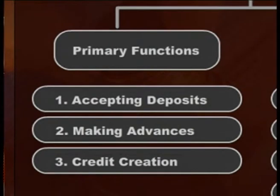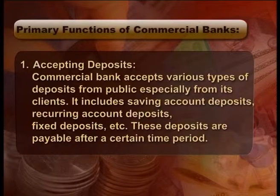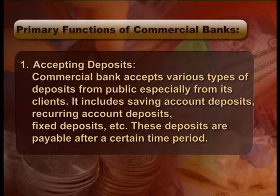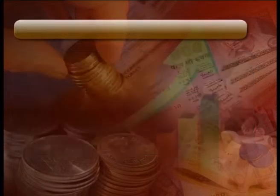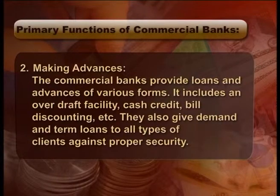Primary functions of commercial banks: Number one, accepting deposits. Commercial banks accept various types of deposits from the public, especially from its clients. It includes saving account deposits, recurring account deposits, fixed deposits, etc. These deposits are payable after a certain time period. Number two, making advances. The commercial banks provide loans and advances of various forms. It includes an overdraft facility, cash credit, bill discounting, etc. They also give demand and term loans to all types of clients against proper security.